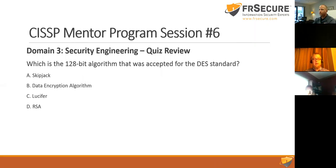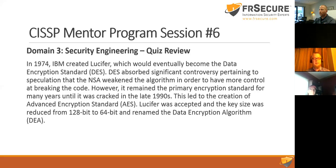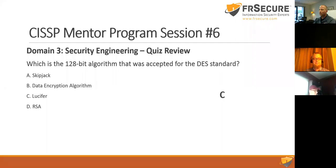Question seven is a trick question: Which 128-bit algorithm was accepted for the DES standard? Options: Skipjack (80-bit, government eavesdropping tool), Data Encryption Algorithm (DEA), Lucifer, or RSA. Many choose DEA, but the correct answer is Lucifer — it's a 128-bit algorithm, while DEA is 64-bit. Both were related to the DES standard, but Lucifer is 128-bit.